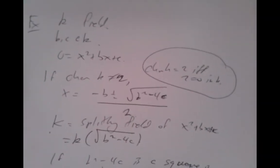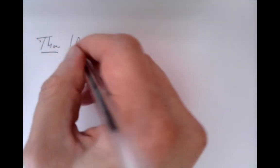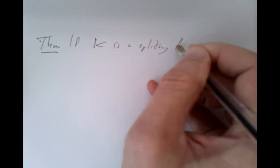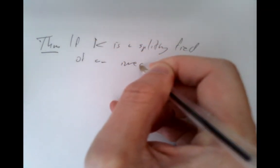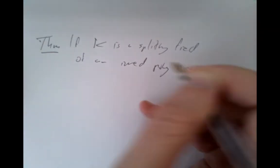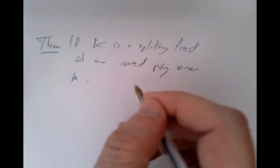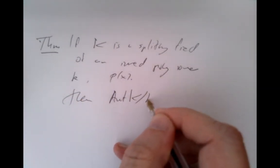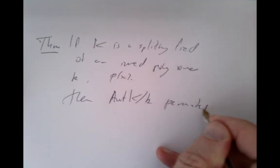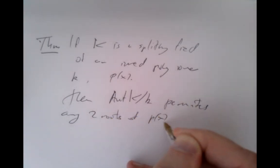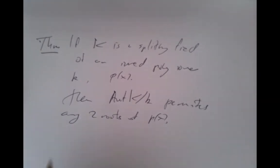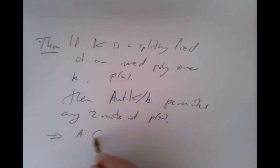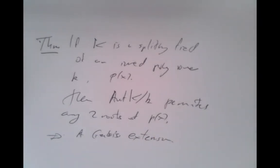The main theorem, which we will eventually prove if we have time, is the following. If K is a splitting field of an irreducible polynomial p(x) in one variable over a field k, then the automorphism group Aut(K/k) acts transitively on the roots: any two roots of p(x) can be swapped. In particular, this implies that it is a Galois extension.